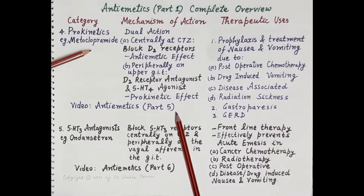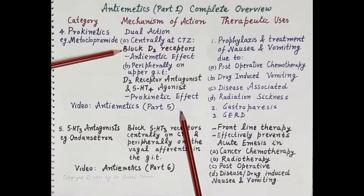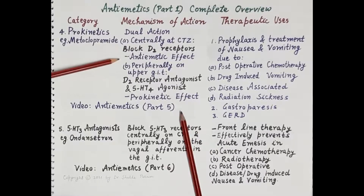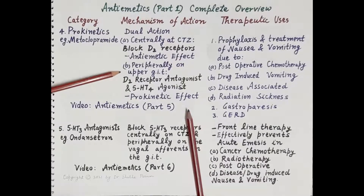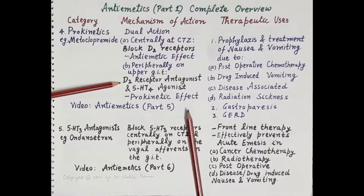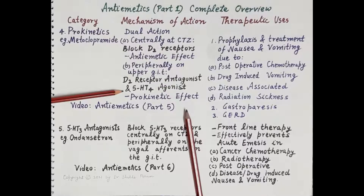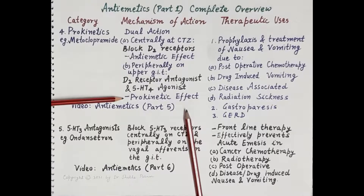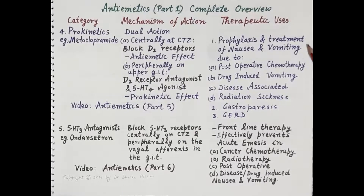Metoclopramide exhibits dual action: centrally, it blocks dopamine D2 receptors on the chemoreceptor trigger zone, making it a potent antiemetic agent. Peripherally, it acts on the upper GIT as a D2 receptor antagonist and 5-HT4 agonist. By virtue of its peripheral action, it speeds up the process of gastric emptying, making it a prokinetic agent and a broad-spectrum antiemetic.